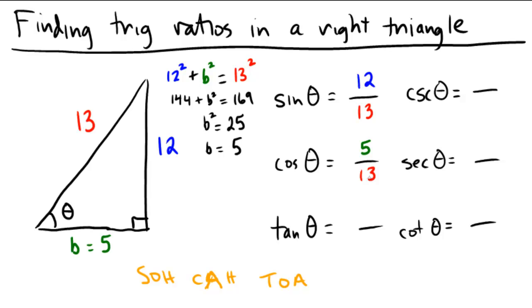And then finally for the TOA, from that angle in the bottom left, we want the TOA, so we want the opposite over the adjacent. So we take the 12, which is opposite, and we put that over 5, which is the adjacent. So that's the SOH-CAH-TOA for the sine, cosine, and tangent.